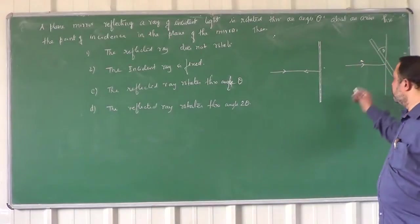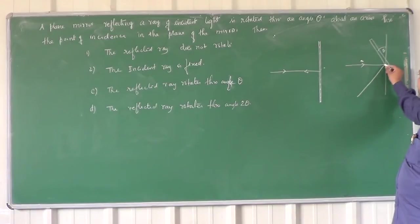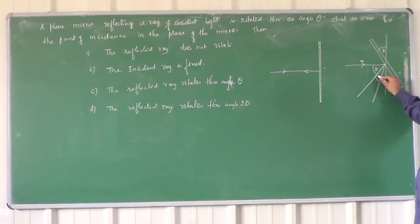This is theta. OK, I draw a normal here and this is the reflected ray. So if this is theta, this will be theta, this will also be theta. So the incident ray has been now deflected totally through an angle off...